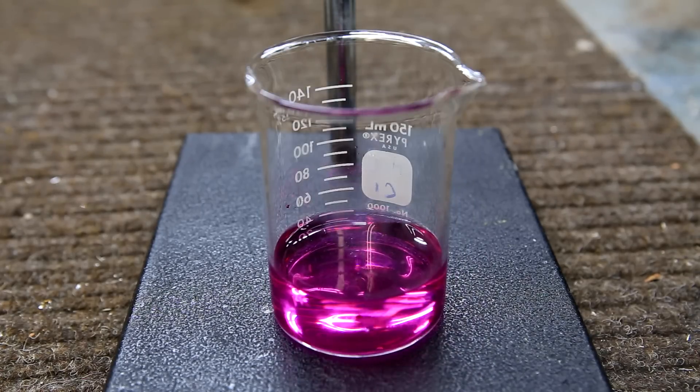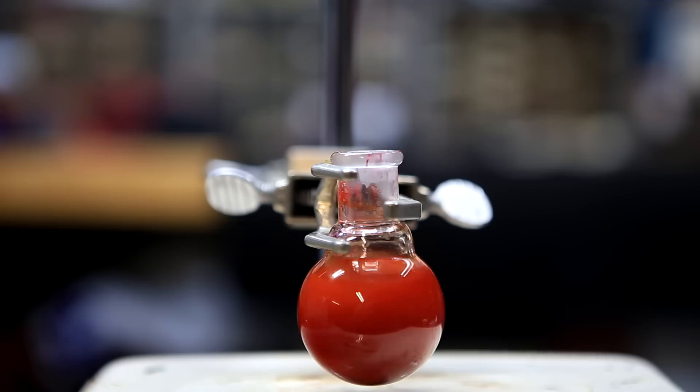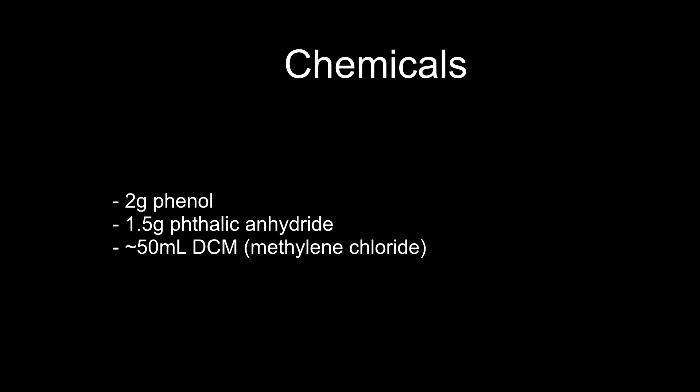Phenolphthalein is an extremely useful acid-base indicator and medically it used to be used as a laxative. For this experiment I used 2 grams of phenol, 1.5 grams of phthalic anhydride, and I think having about 50 ml of DCM would be good.